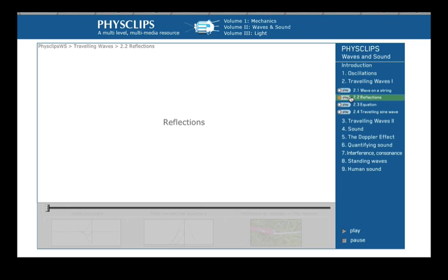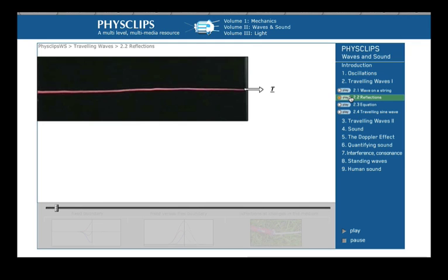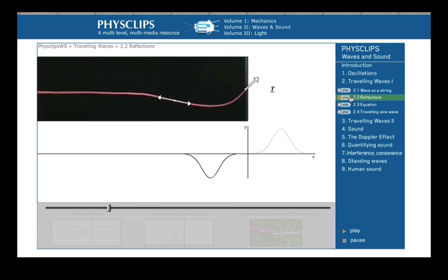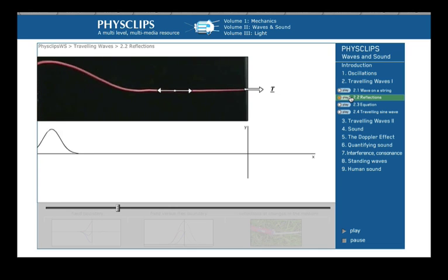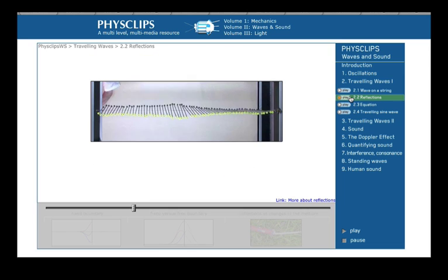At boundaries, there are usually reflections. This string is tied to an object so massive that its acceleration is negligible. As the pulse reaches the boundary, the force exerted on the string by the fixed end accelerates the peak downward. The resultant momentum takes it past equilibrium into negative displacement. So at an immovable boundary, we say the wave is reflected with a phase change of pi. The animation shows the original pulse travelling right plus an inverted pulse travelling left. In a linear medium, we can simply add them to give the observed reflection. In this apparatus, torsional waves travel in one dimension. The displacement here is the angular displacement of these bars and the restoring effect comes from the torsional stiffness of this steel strip. The inertia is the rotational inertia of the bars. With a fixed boundary, we again see reflection with a phase change of pi. Now we remove the clamps, the boundary is completely free. What happens at reflection this time?